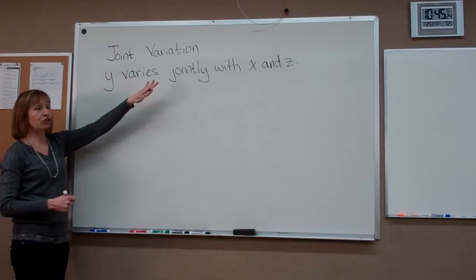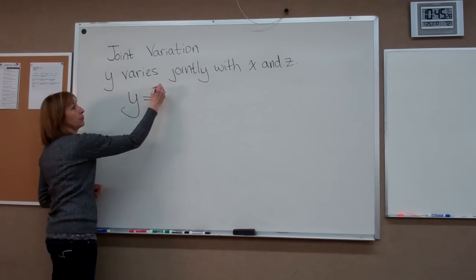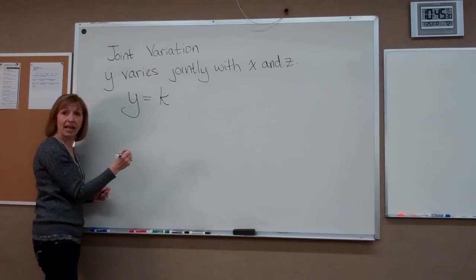So when I say y varies jointly with x and z, we write y equals, remember your constant of proportionality k,